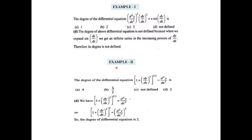Another example: the equation (1 + (dy/dx)²)^(3/2) = d²y/dx². Here the power 3/2 is a fraction, not a positive integer. We must express it in positive integer powers by squaring both sides to remove the fractional power. After squaring, the highest order derivative is 2, so the order is 2 and the degree is 2.